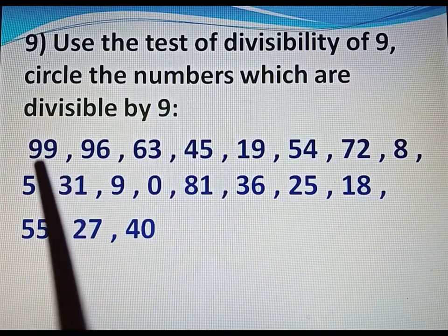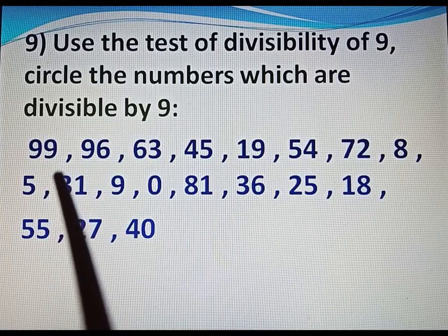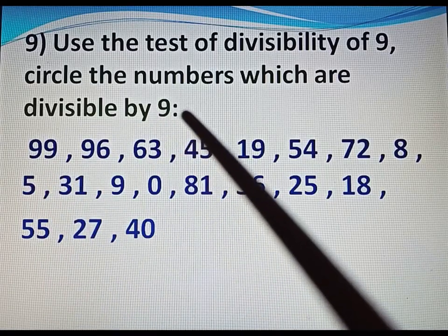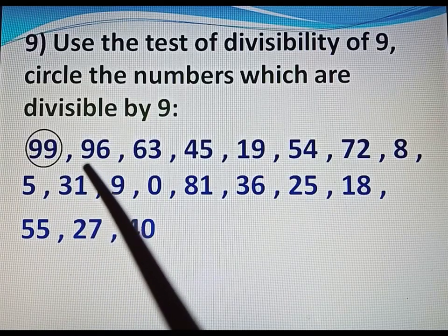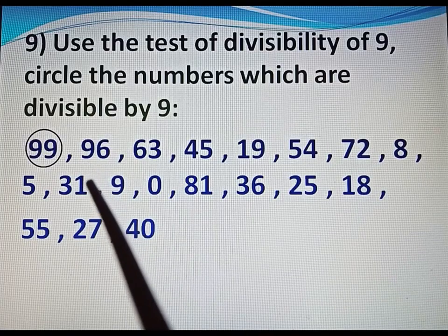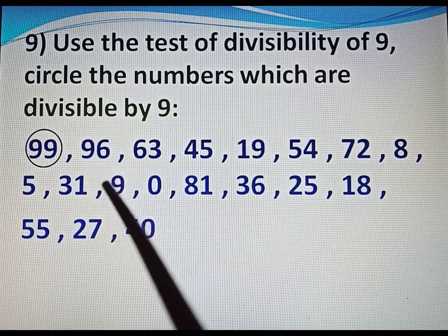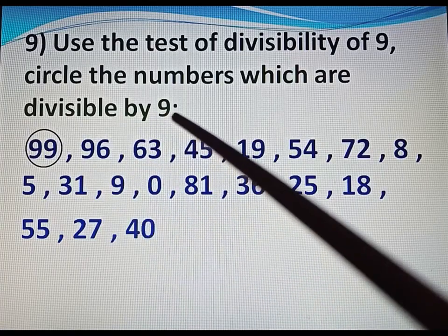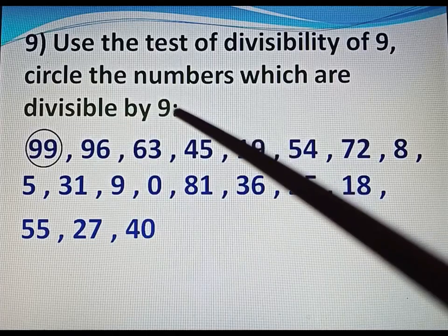First number is 99: 9 plus 9 equals 18, and 18 is divisible by 9, so 99 is also divisible by 9. Circle 99. Next number is 96: 9 plus 6 equals 15, and 15 is not divisible by 9, so 96 is not divisible by 9.